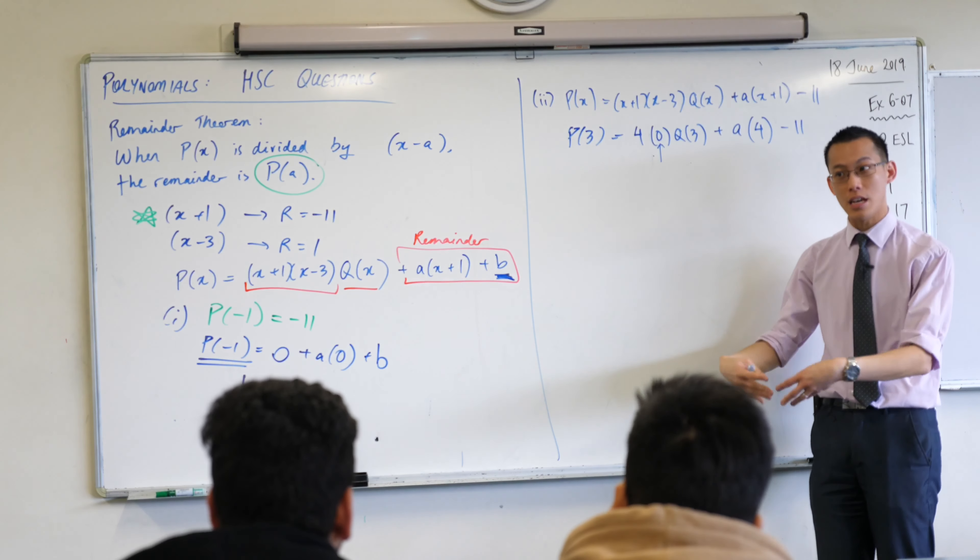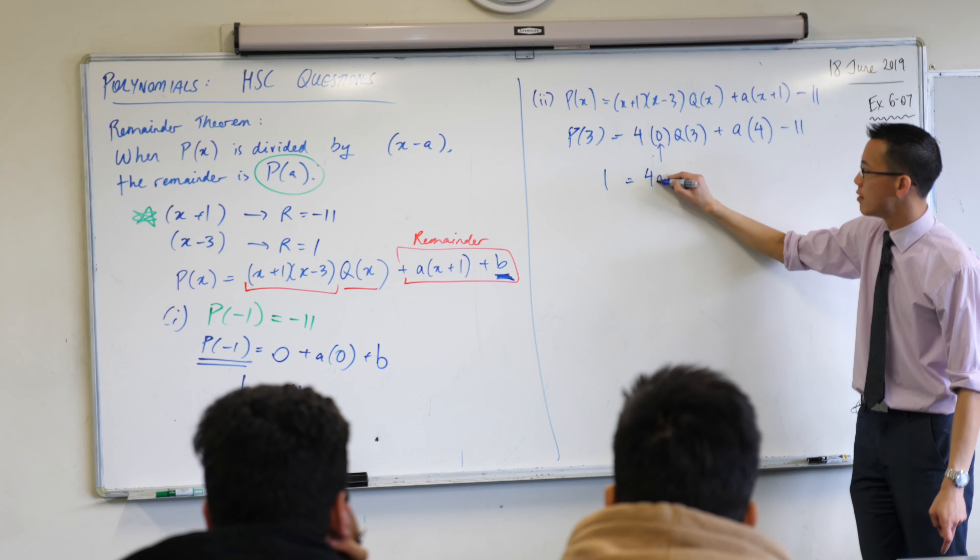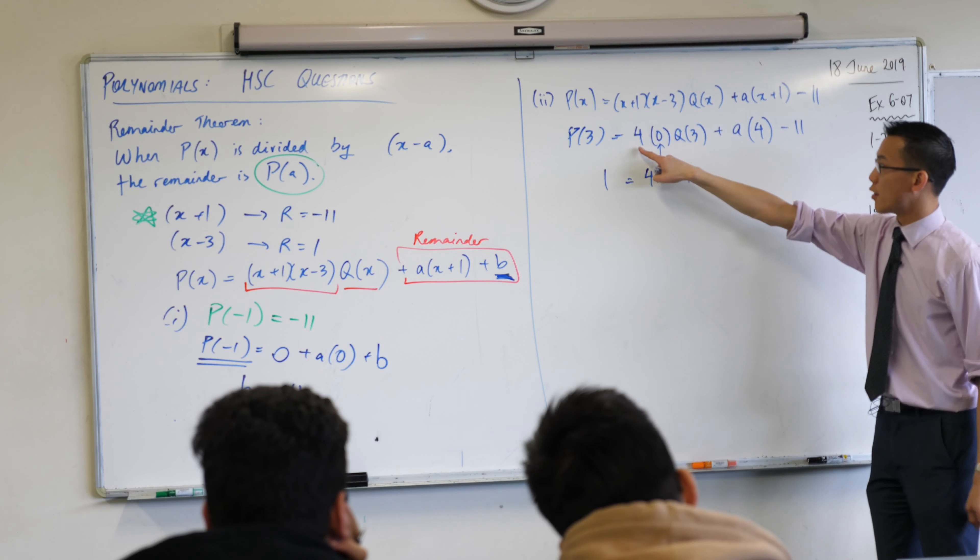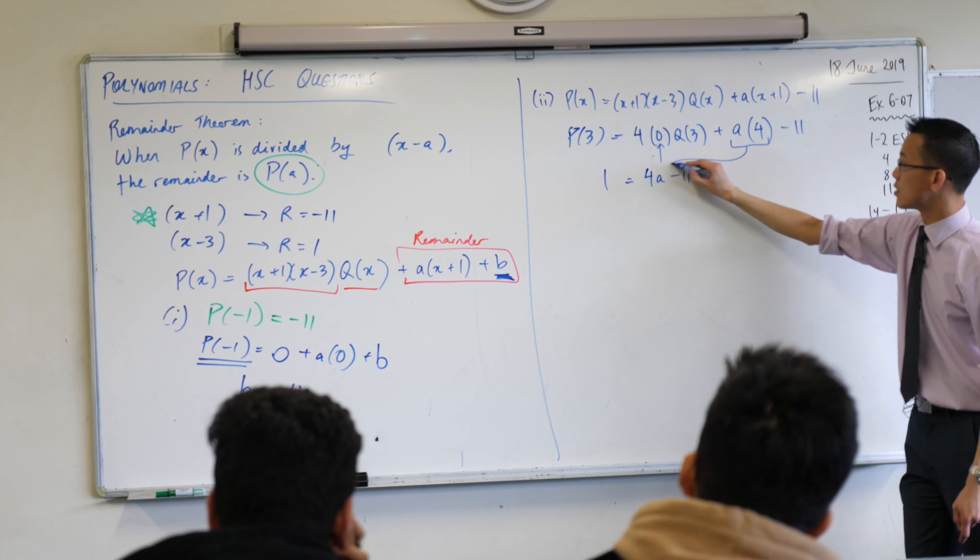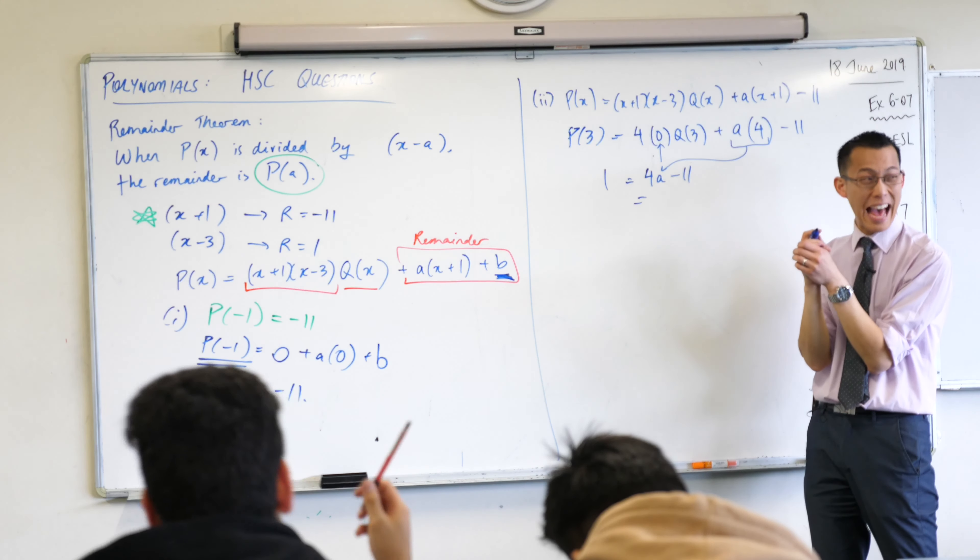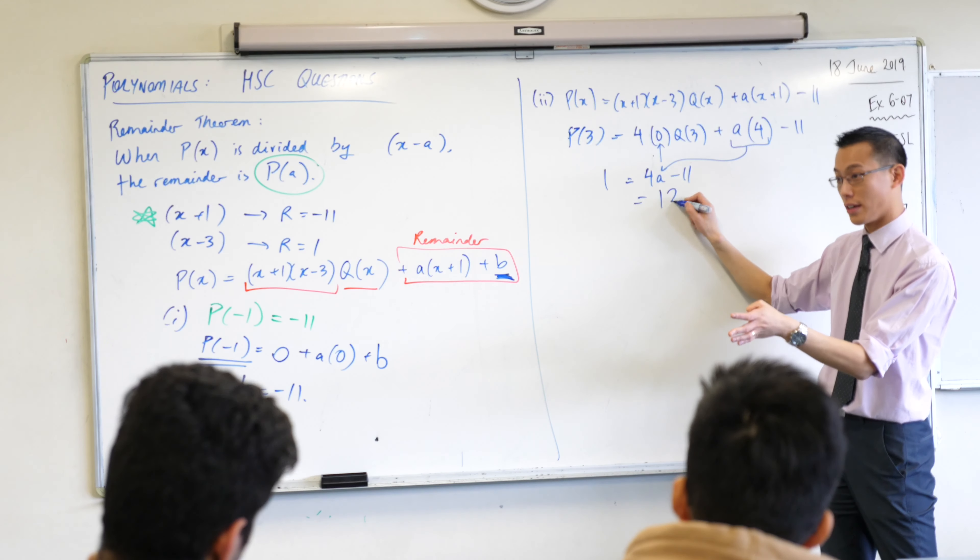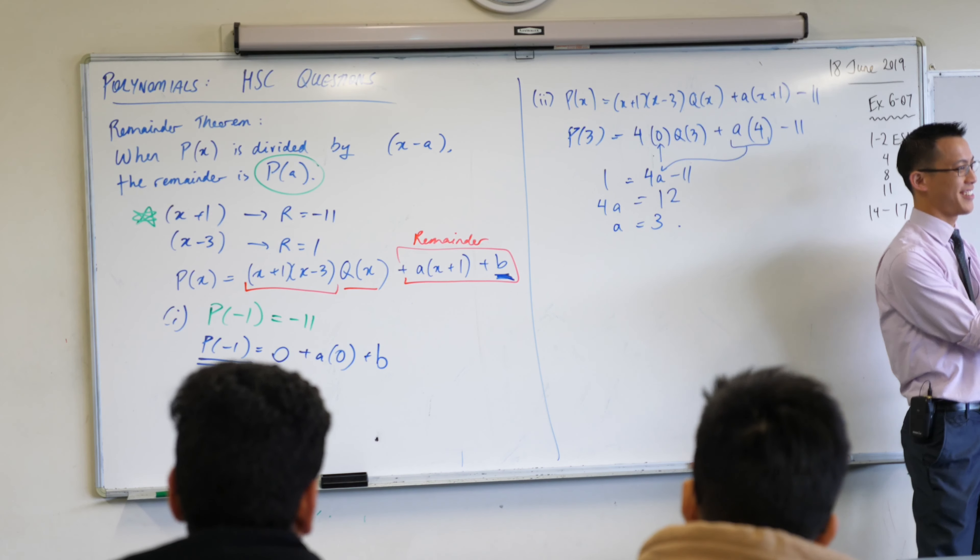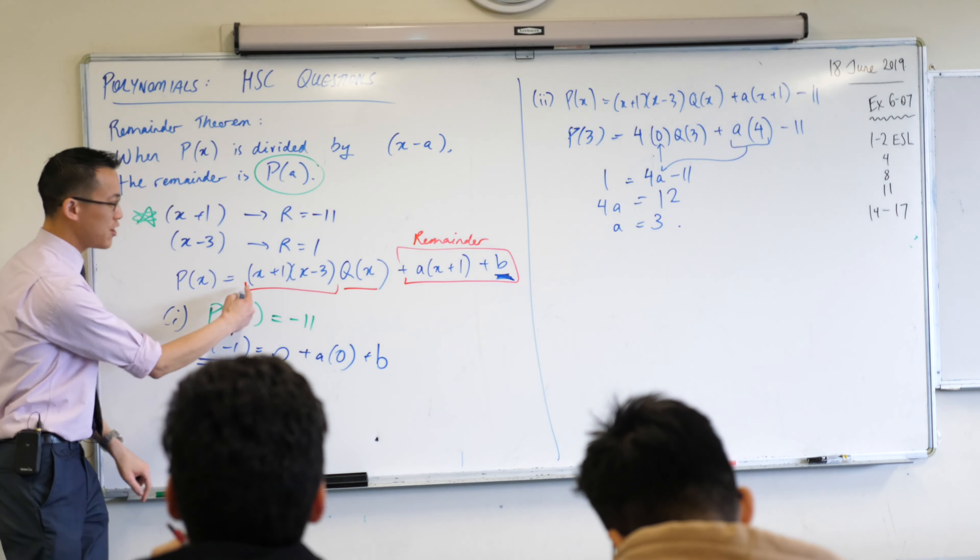Now thankfully, from the original question I know what P(3) is supposed to be equal to. In the beginning it's supposed to be equal to 1. So I'm going to write 1 equals 0 plus this stuff. And now I can just tidy up the algebra. We're going to add 11 to both sides - that'll make a 12 over here. But to make a the subject, I'm going to write the 12 over here, then we can divide through by 4, which gives a equals 3.